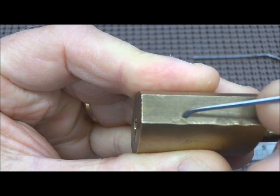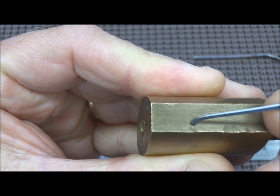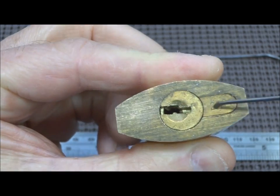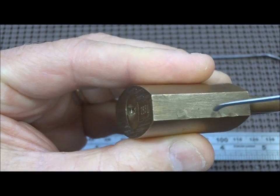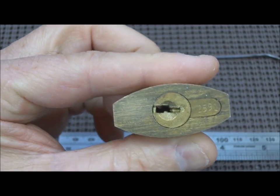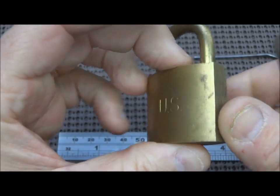If you look very closely, you can see the outline, a faint outline of the pin that's used to secure this core. So we'd have to destroy this lock to get that core out. And I'm just not going to do that.